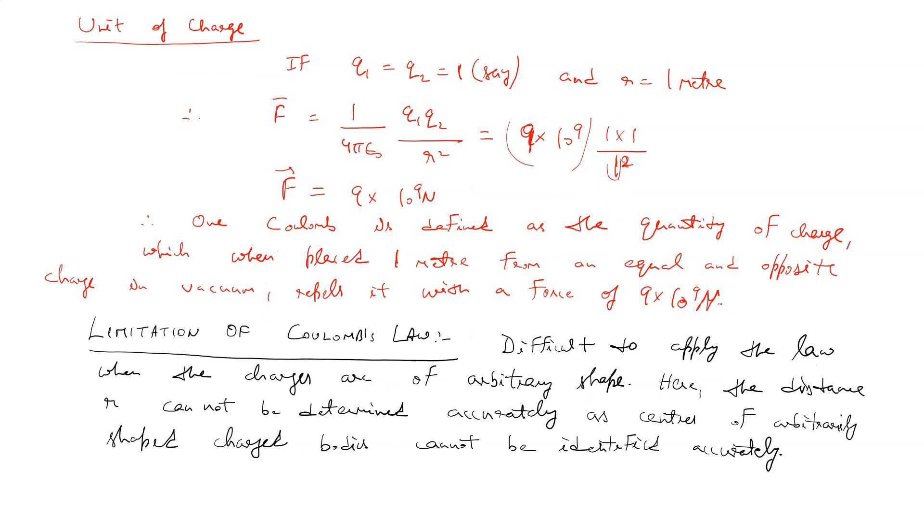Unit of charge: if q1 equals q2 equals 1 coulomb and r equals 1 meter, then F equals 9 into 10 power 9 newton. One coulomb is defined as the quantity of charge which, when placed 1 meter from an equal and opposite charge in vacuum, repels it with a force of 9 into 10 power 9 newton.